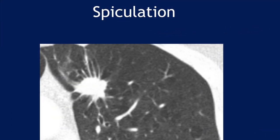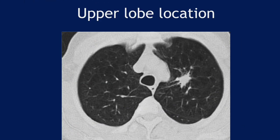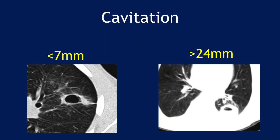A nodule with spiculated margins is definitely suspicious for malignancy. Upper lobe location increases the chances of malignancy. Regarding cavitation: wall thickness less than 7 mm is likely benign; anything more than 24 mm is likely malignant — this was based on a recent study. However, there is actually no definite measurement by which we can call it definitively benign or malignant.